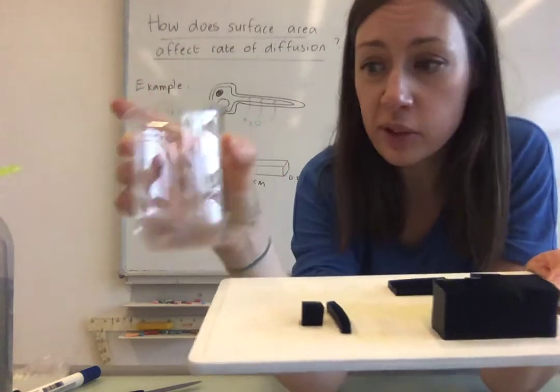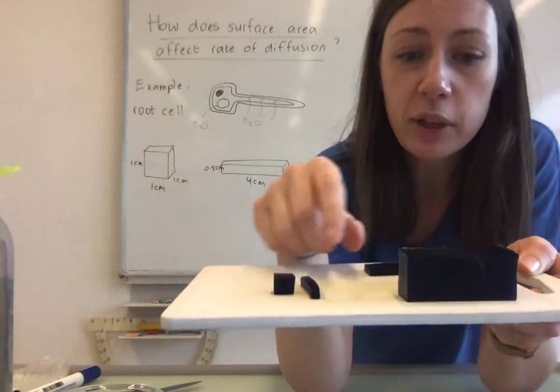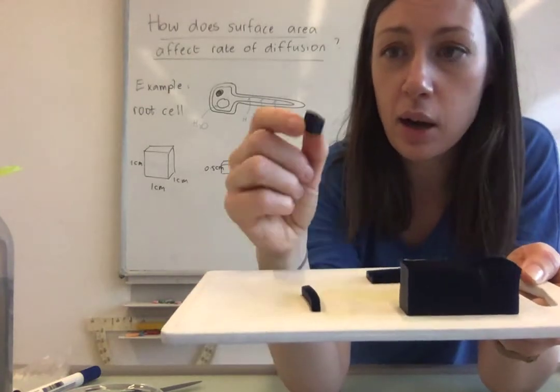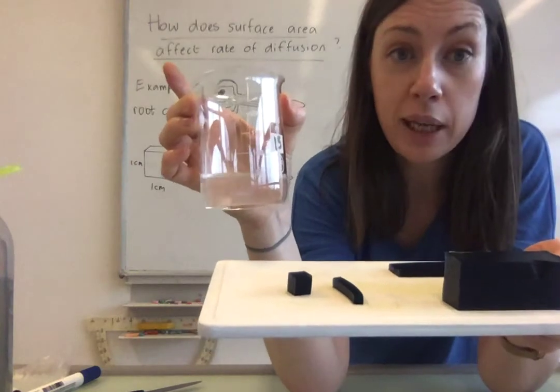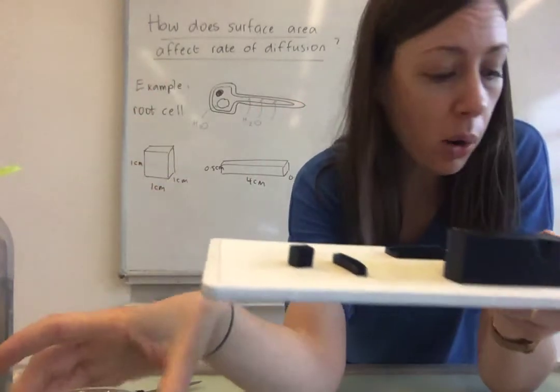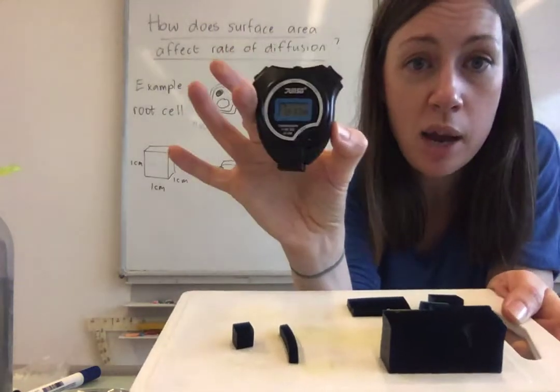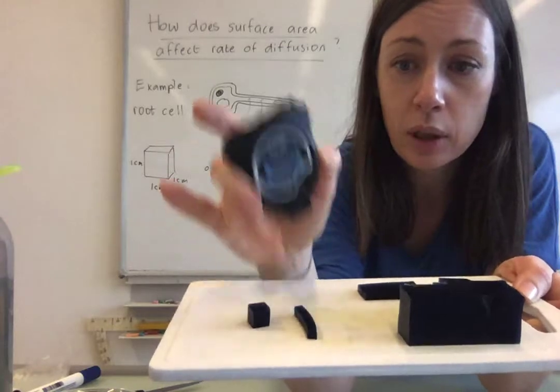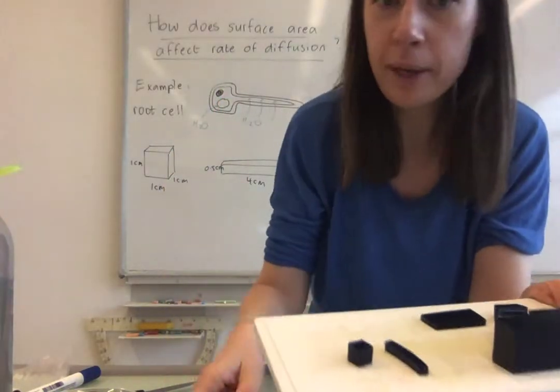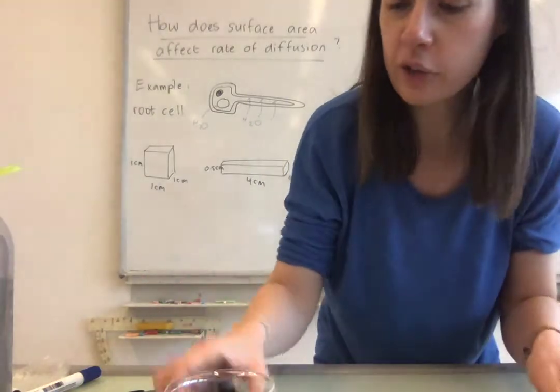And you're probably still thinking what am I measuring? Well I'm going to measure the time it takes for these to change color because when I put the agar in the vinegar it will start to change color from blue to yellow. We're going to measure the time it takes for the whole thing to change color. So I'm going to put them in and start my timer.